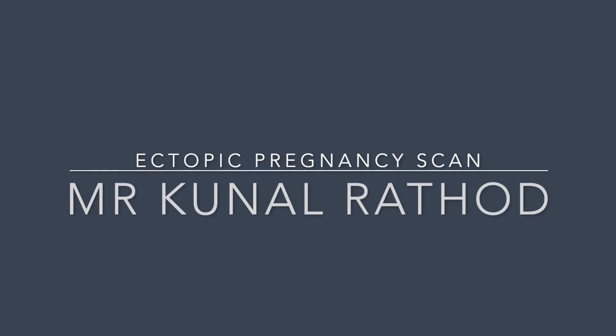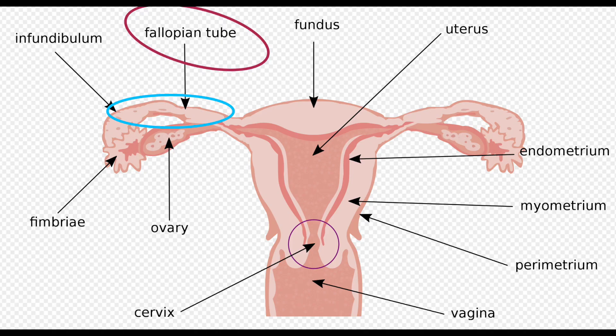This is a video demonstrating ultrasound scan for an ectopic pregnancy. This is the anatomy of the uterus, tubes, and ovaries. The one marked in the blue circle is the fallopian tube.